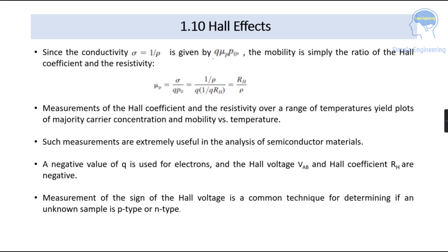So such measurements are extremely useful in the analysis of semiconductor materials and the negative value of q that is used for electrons and the Hall voltage that is Vab and the Hall coefficient Rh that will be negative. So the measurement of the sign of the Hall voltage is a common technique for determining an unknown sample whether that is a p-type or n-type.